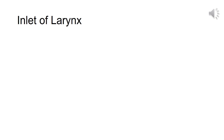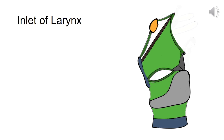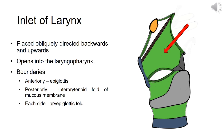First, let's see the inlet of the larynx. For that we will bring back the old diagram of ligaments of the larynx which we practiced drawing in our Part 1 video. Here, this is the inlet of the larynx — it is placed obliquely, directed backwards and upwards, and it opens into the laryngopharynx. The boundaries of the inlet of the larynx are: the epiglottis anteriorly, the inter-arytenoid fold of mucous membrane posteriorly, and on each side it is bound by the ary-epiglottic fold.